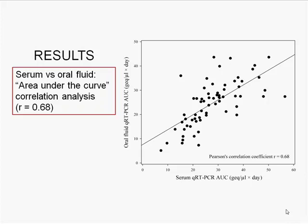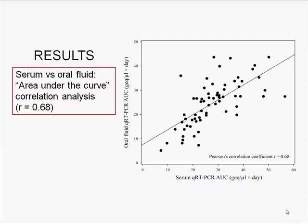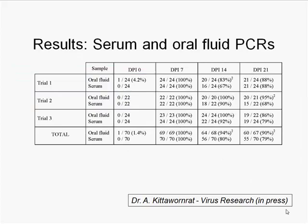You can quantitatively compare serum and oral fluid PCRs using area under the curve correlation data — calculating the area under each curve for individual boars and running correlation analysis. The correlation is nearly 0.7, and the data points track together nicely.